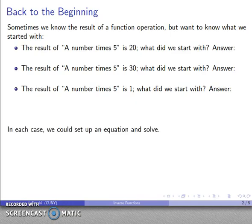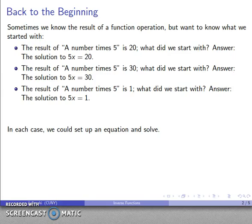In every case, I could set up an equation and solve it. So I want to solve 5 times x equals 20, and I figure out what the solution is. And then I have this next problem. I have a number times 5 is 30, so I want to solve 5 times x equals 30. And then I have a number times 5 equals 1, so I want to solve 5 times x equals 1.